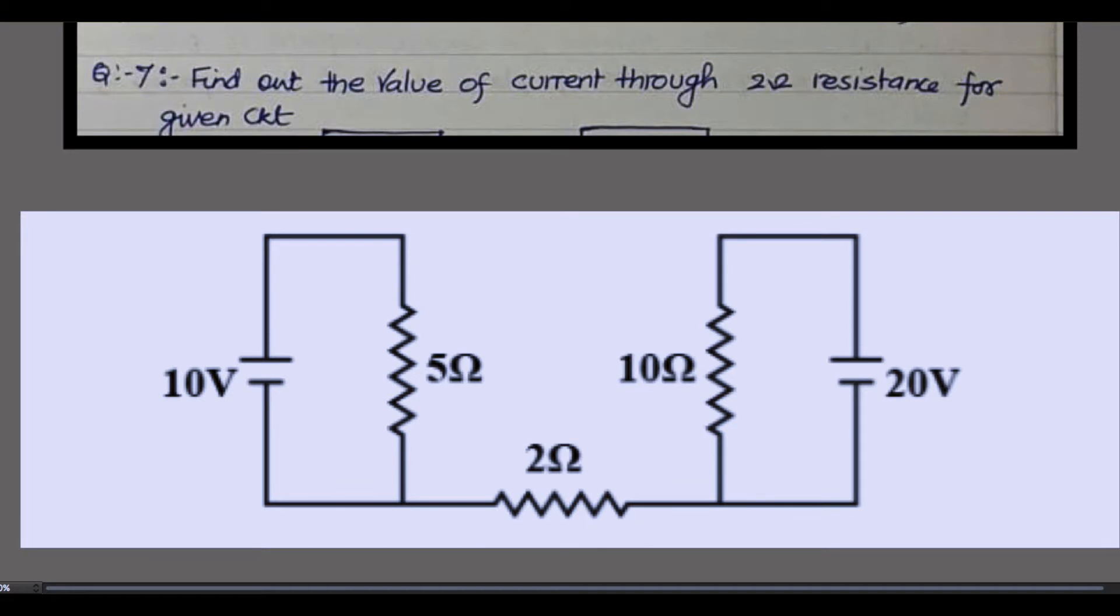So here I am considering i1 current is flowing from here. If i1 current is flowing from here, then i1 current has to come back. If i1 current is going out, then i1 current has to come back, so here the current is flowing in this direction.